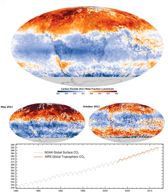On long timescales, atmospheric CO2 concentration is determined by the balance among geochemical processes including organic carbon burial in sediments, silicate rock weathering, and volcanism. The net effect of slight imbalances in the carbon cycle over tens to hundreds of millions of years has been to reduce atmospheric CO2.